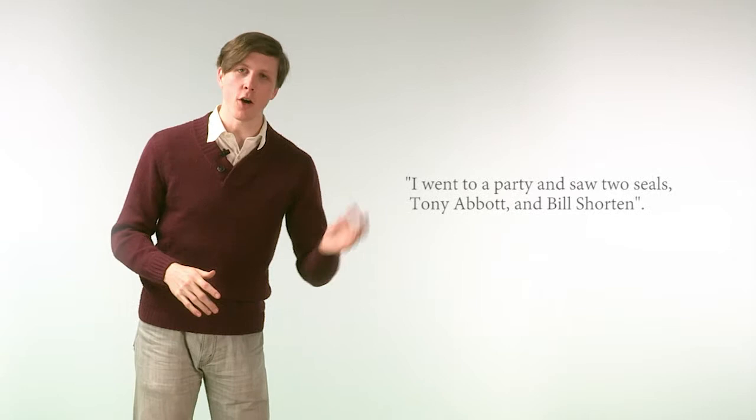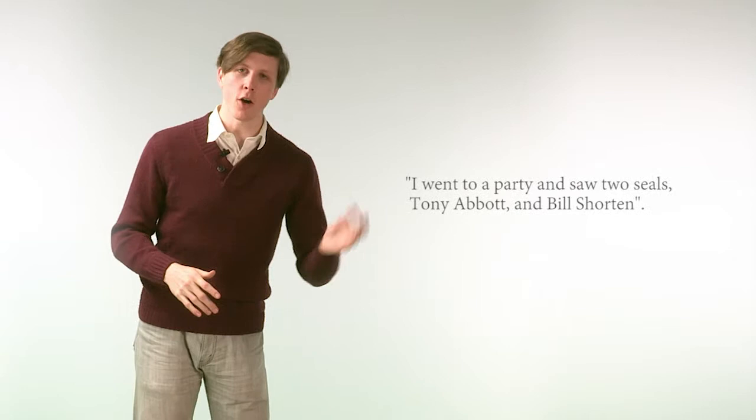Without the Oxford comma, it looks like Bill Shorten and Tony Abbott were the two seals or the names of the two seals. But if we put the comma before the 'and', you can see that we've actually clearly demarcated the three. So we have the two seals, Tony Abbott, and Bill Shorten.